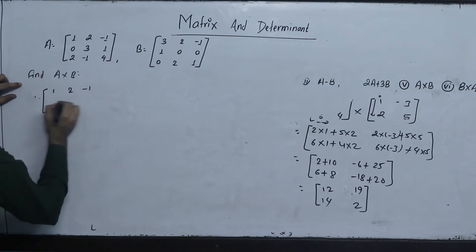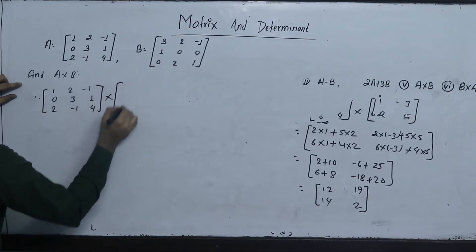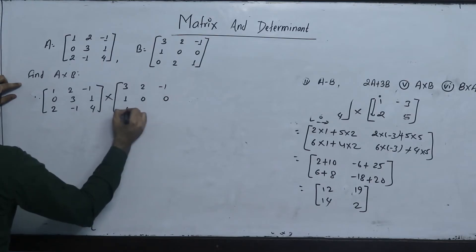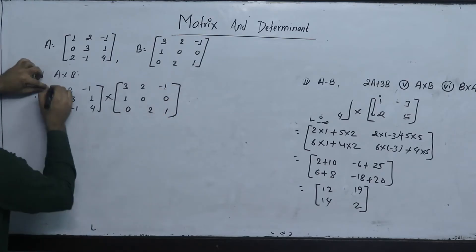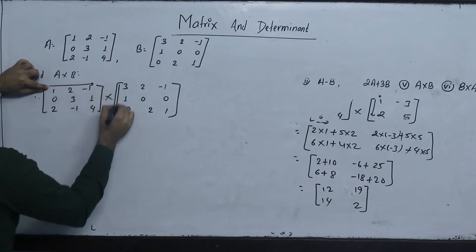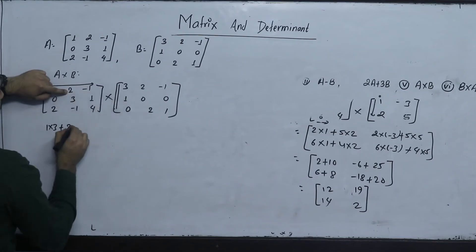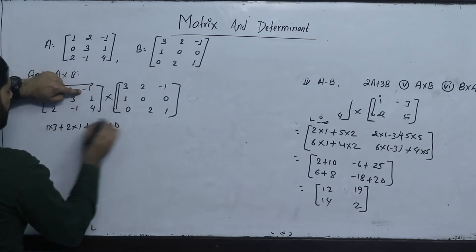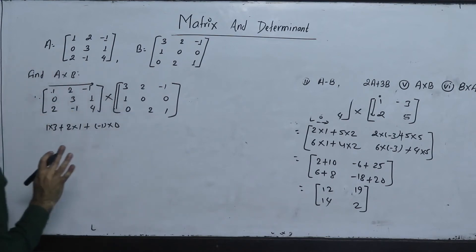A into B: matrix A is 1, 2, minus 1, 0, 3, 1, 2, minus 1, 4, multiplied into matrix B: 3, 2, minus 1, 1, 0, 0, 0, 2, 1. First row, first column: 1 into 3 plus 2 into 1 plus minus 1 into 0 gives 3 plus 2 plus 0. First row, second column: 1 into 2 plus 2 into 0 plus minus 1 into 2. First row, third column: 1 into minus 1 plus 2 into 0 plus minus 1 into 1.